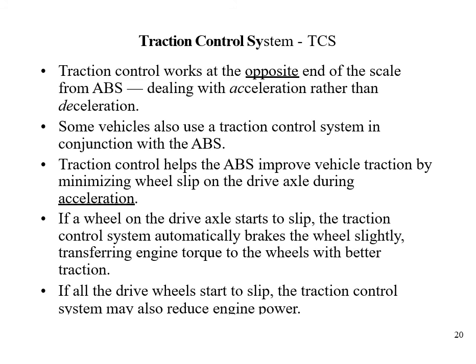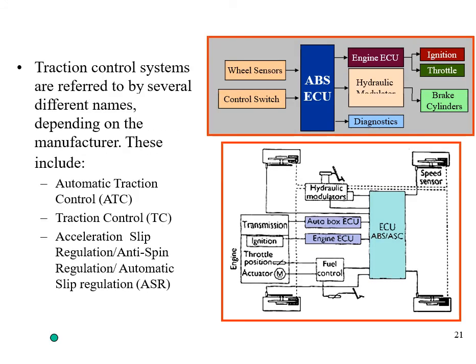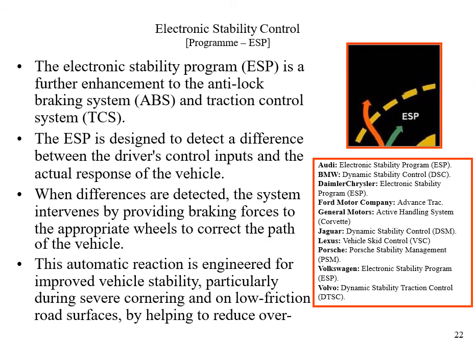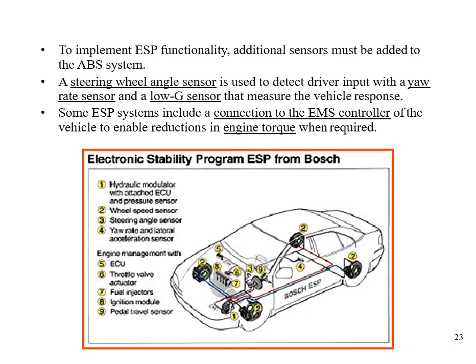If all drive wheels start to slip, the traction control system may also reduce engine output. Electronic stability control (ESC) is another component used along with ABS. ESC detects the difference between the driver's control inputs and the actual response of the vehicle; when differences are detected the system intervenes by providing braking forces to appropriate wheels to correct the vehicle's path. This is an automatic reaction improving vehicle stability, particularly during severe cornering and on low friction road surfaces. Additional sensors may be added including a steering wheel angle sensor, yaw rate sensor, and a lateral g-sensor to measure vehicle response.